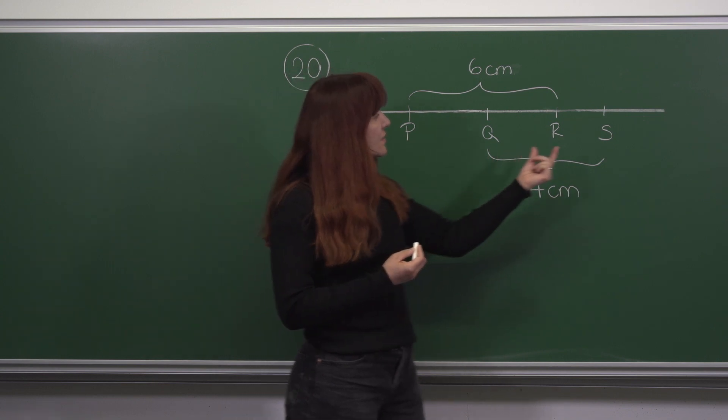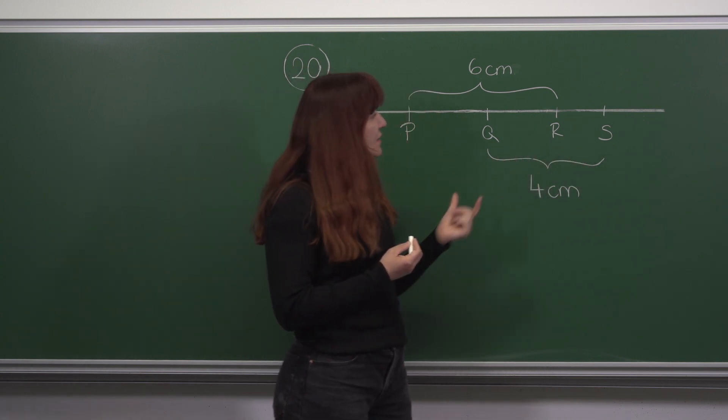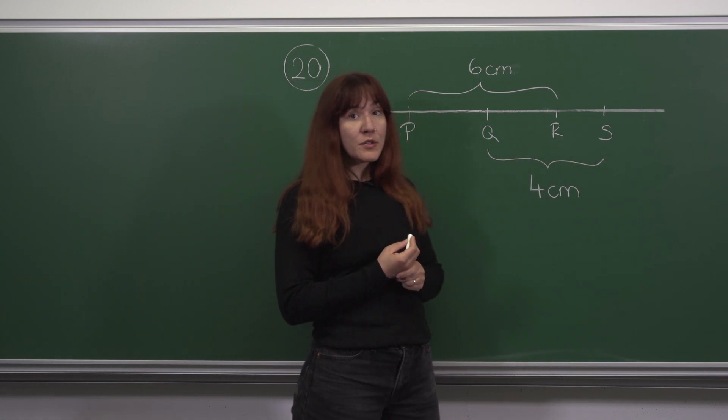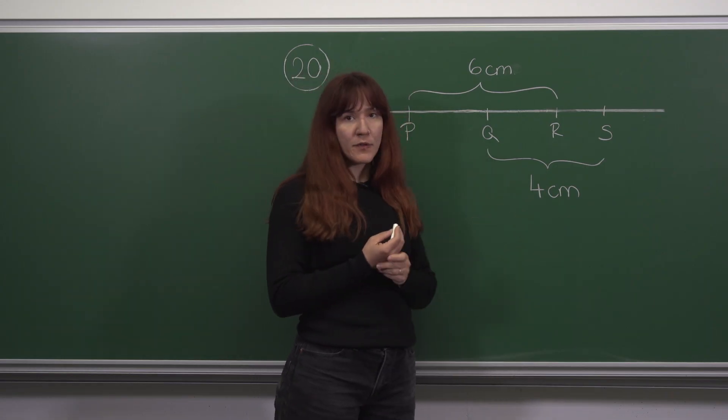Now because R is one centimeter closer to S than it is to Q, essentially we are looking for two numbers that are one apart and their total is four.